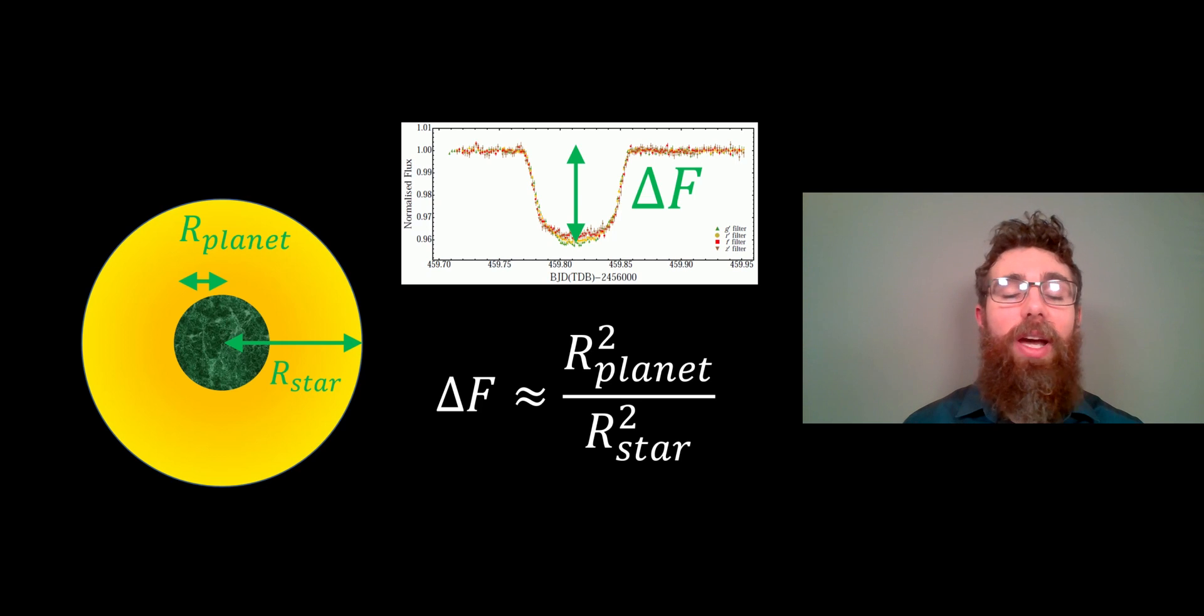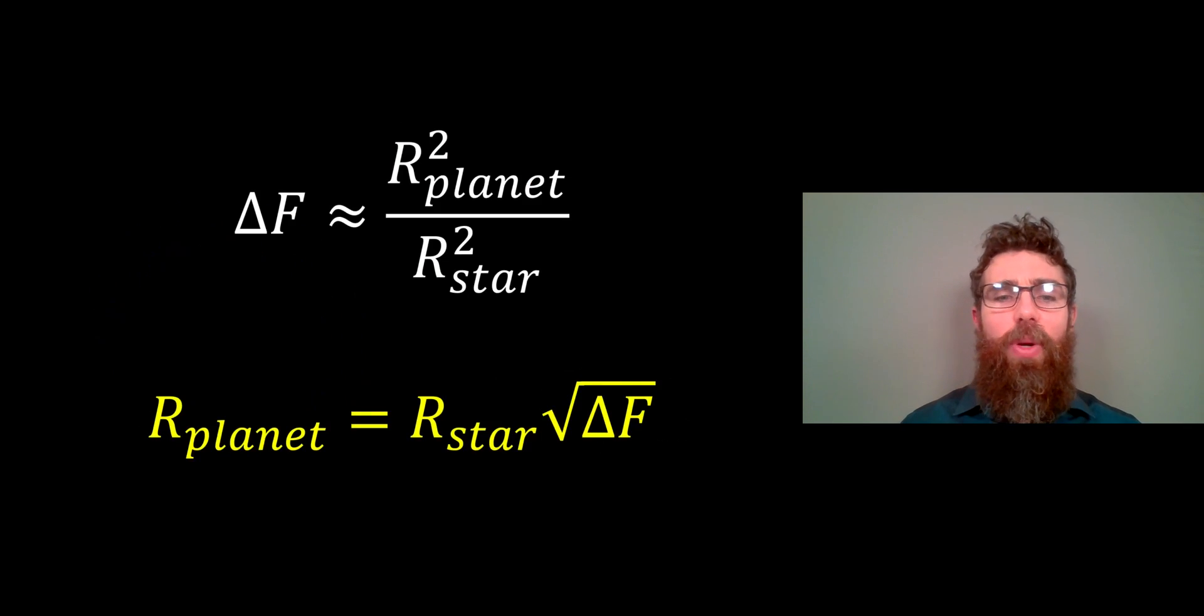The radius of the star can be calculated using other methods, so a lot of the time that information would already be available once you've detected a planet. If we rearrange for the radius of the planet, we get this at the bottom here. Your radius of the planet equals the radius of the star times the square root of the change in brightness of the star.